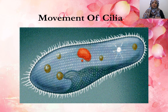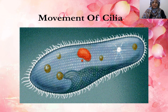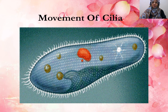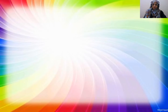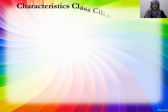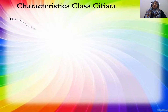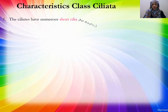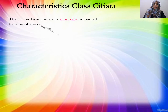Cilia are also used in movement. The characteristics of Class Ciliata include very short cilia present all over the body.